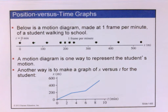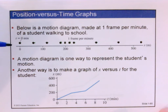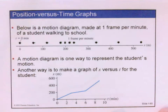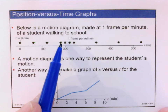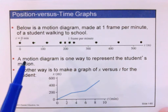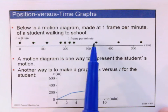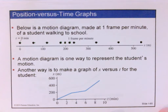We discussed motion diagrams — that's the top view here — and this would be one frame per minute of a student walking to school. We talked about how you get a lot of useful information about motion with a motion diagram. We can see that the student is moving large distances per one-minute interval for about three minutes, and then the student moves much smaller distances every minute for the next three minutes, and then the student moves even farther than before for a few minutes at an even larger distance.